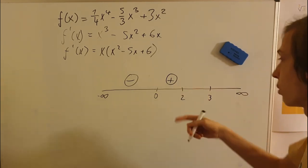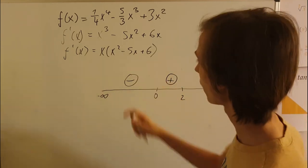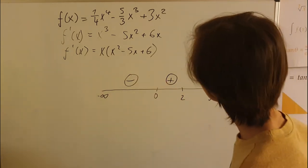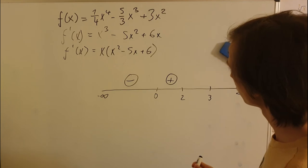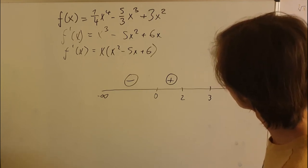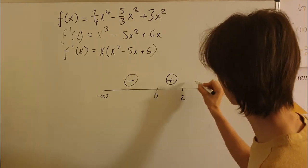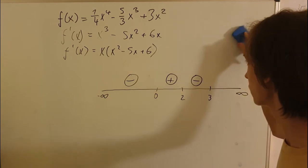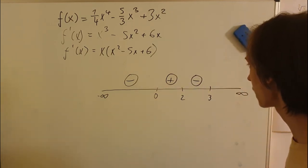Two and three between there is 2.5, for example. So let's plug in 2.5. That's minus. This is a minus interval. This is a descending interval, okay?